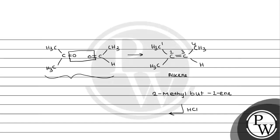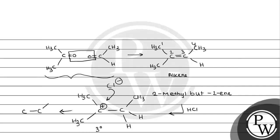Now if we add HCl to this alkene, the double bond will take H+. Which carbon takes it depends on which resulting carbocation is more stable. If hydrogen adds to the left carbon, a carbocation is generated on the right — that is a 3° carbon. If hydrogen adds to the right carbon, a 2° carbocation forms. Since 3° carbocation is more stable than 2° or 1°, the carbocation forms on the 3° carbon, and chloride (nucleophile) attacks there. This is Markovnikov addition.